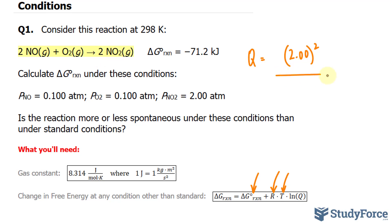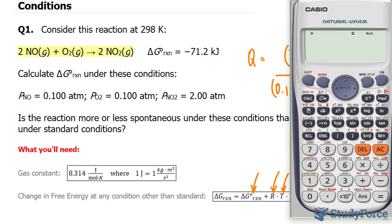Divided by the partial pressures of the reactants. So given right here is 0.100, that's being raised to the power of 2 because of the leading coefficient, times 0.100, the partial pressure of oxygen. Let's find out what this is. We'll use our calculator.